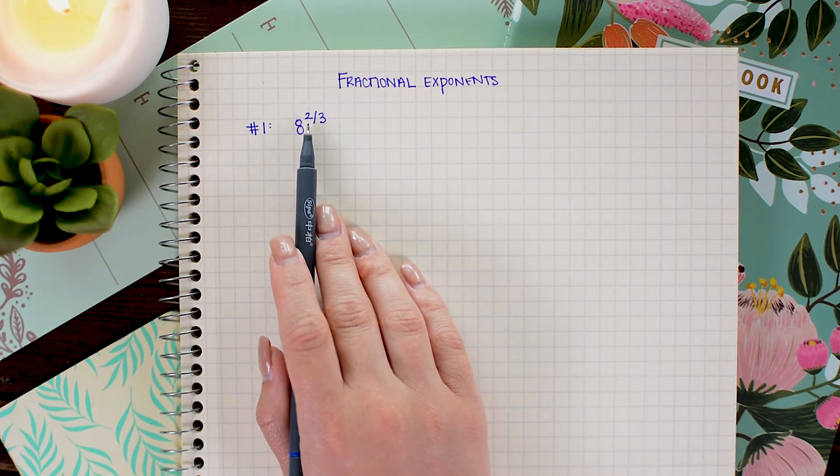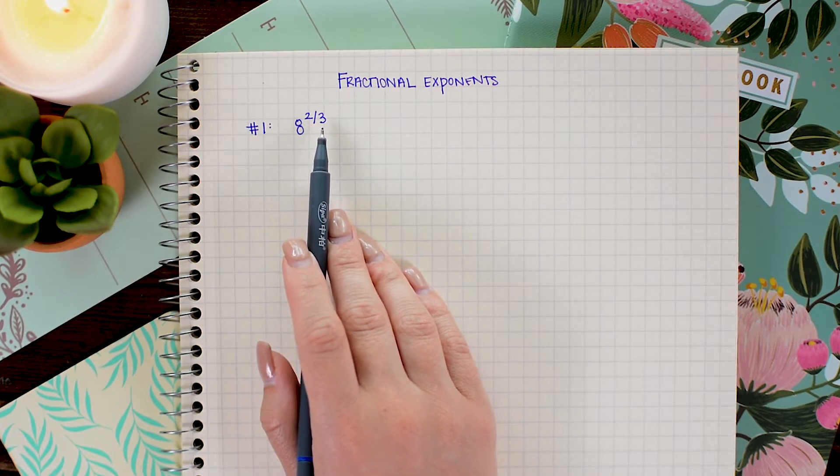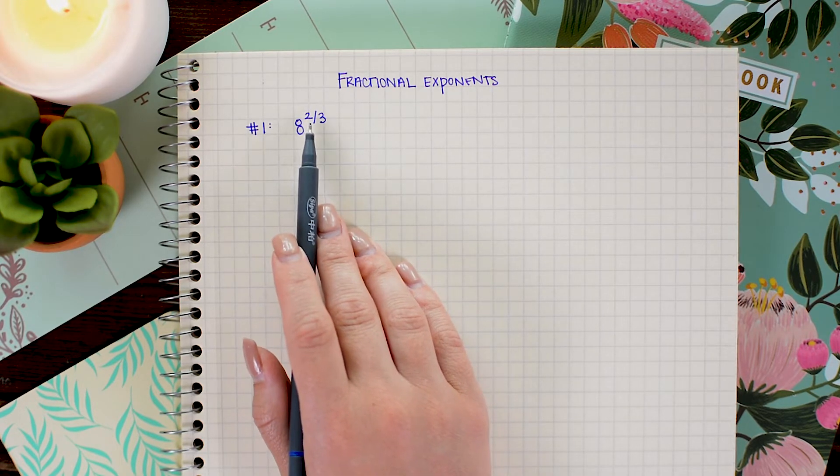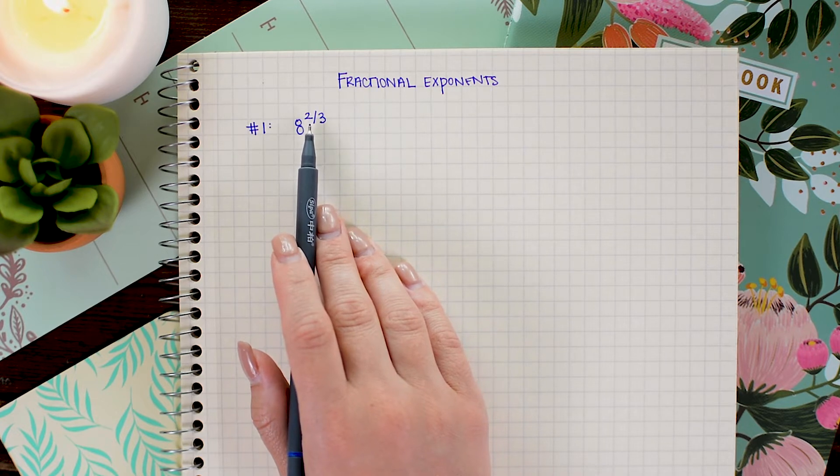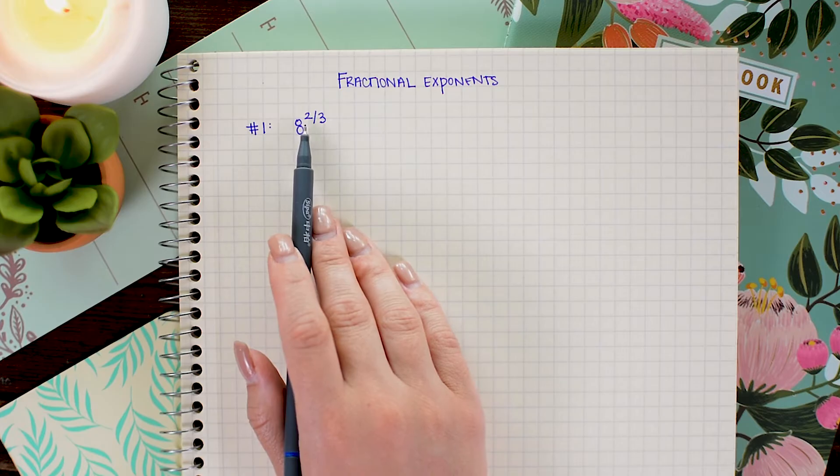We have the numerator, in this case the 2, and the denominator, in this case the 3. Now the 2 behaves like the normal power that you're used to, and it will square the number. So 8 is still being squared.